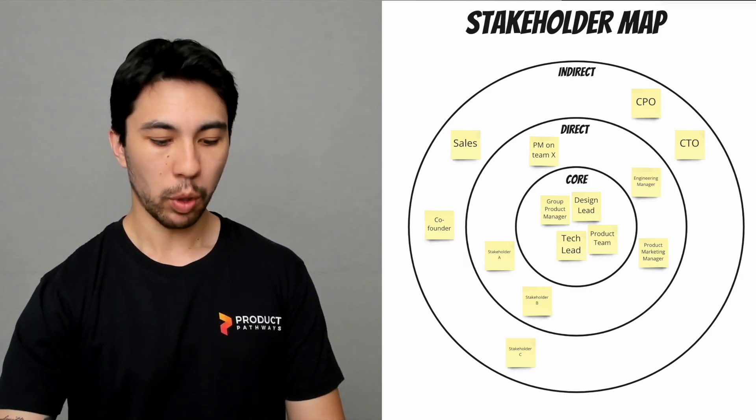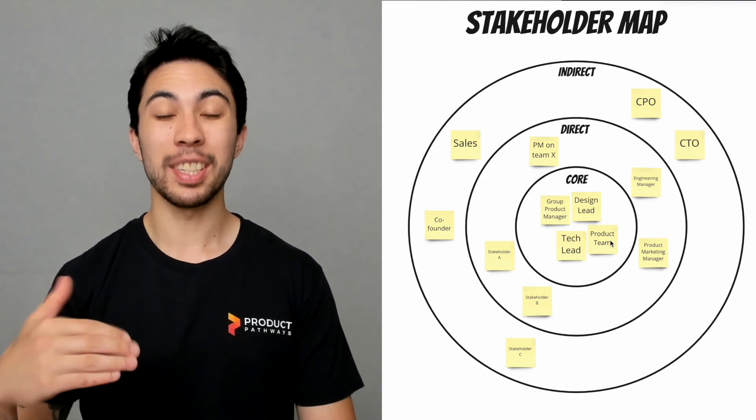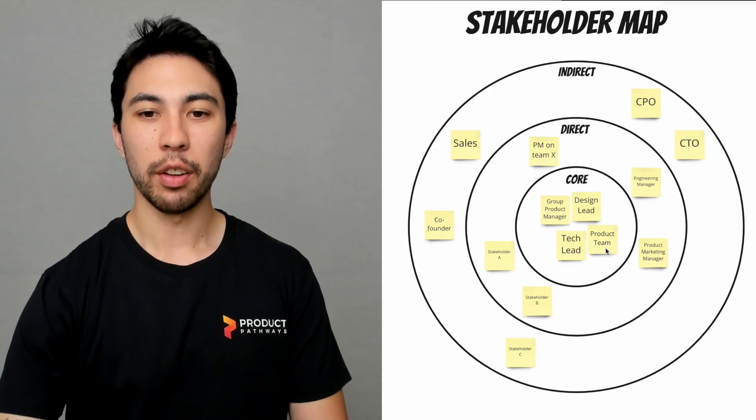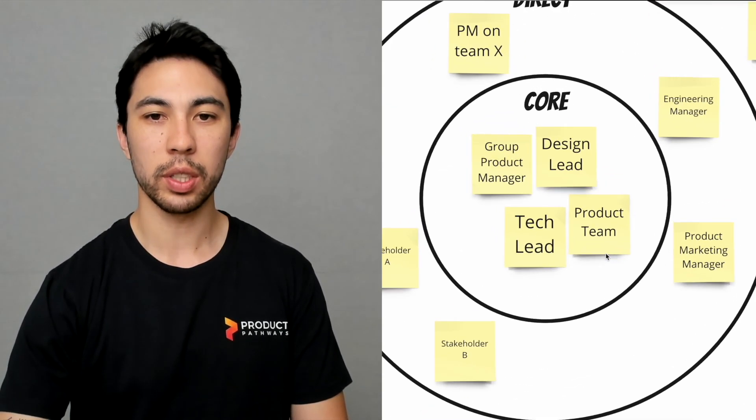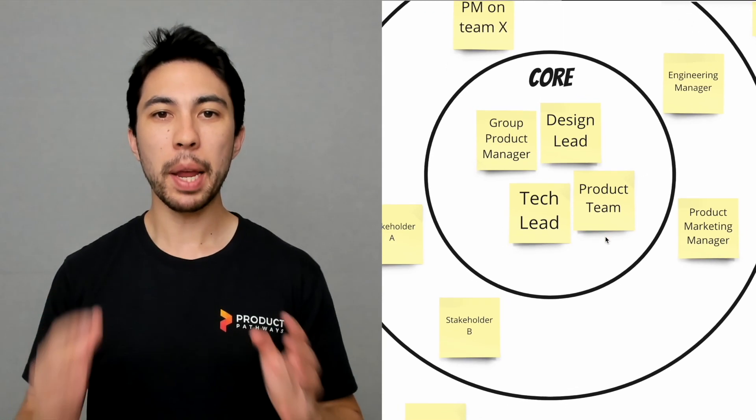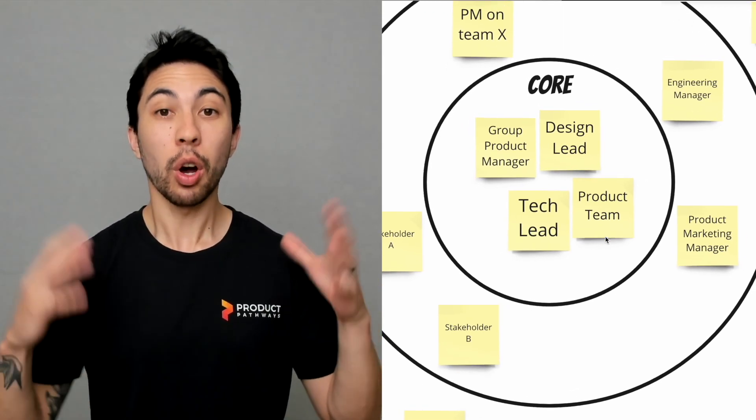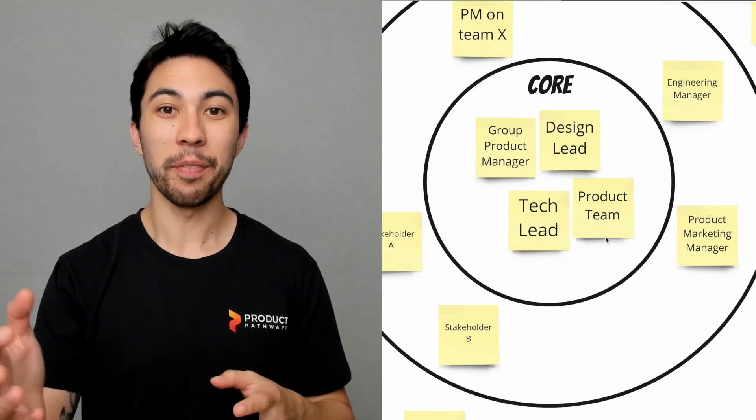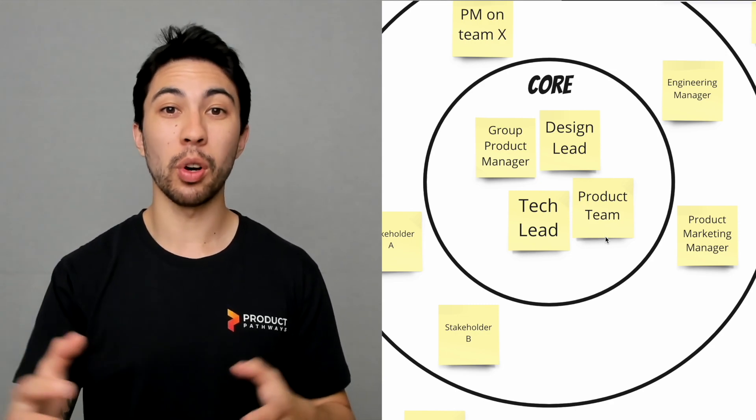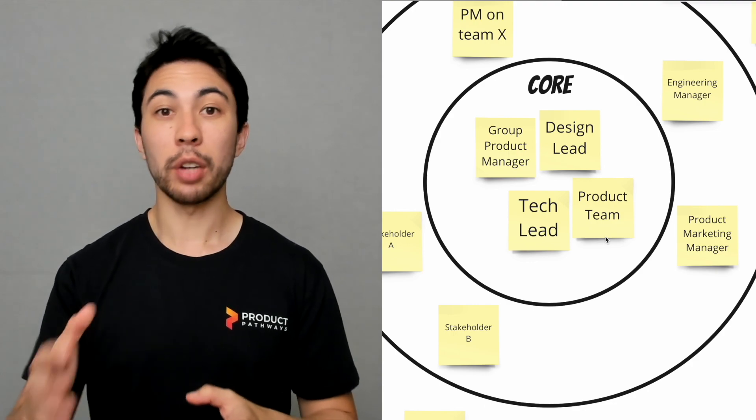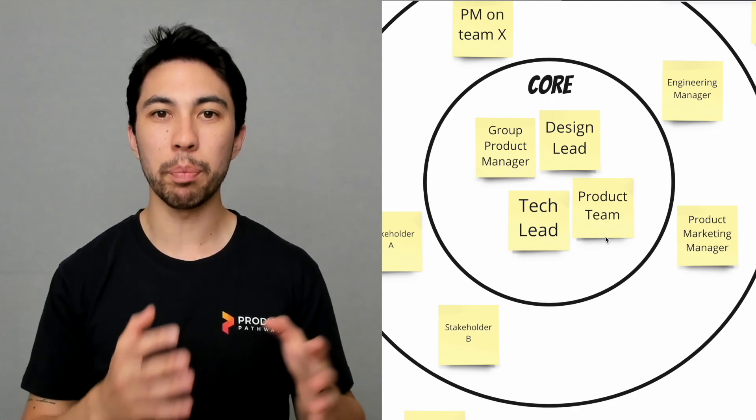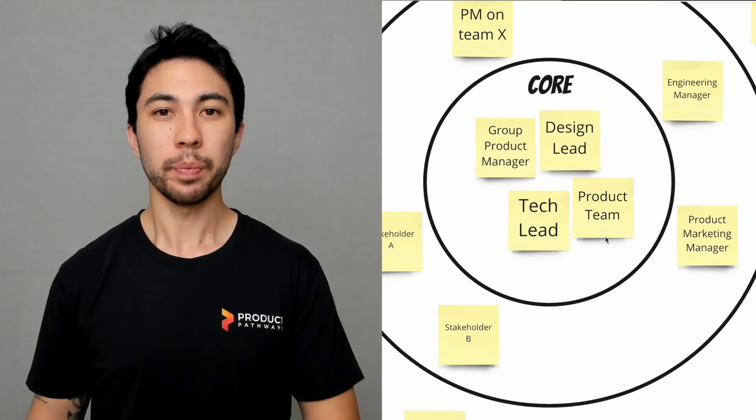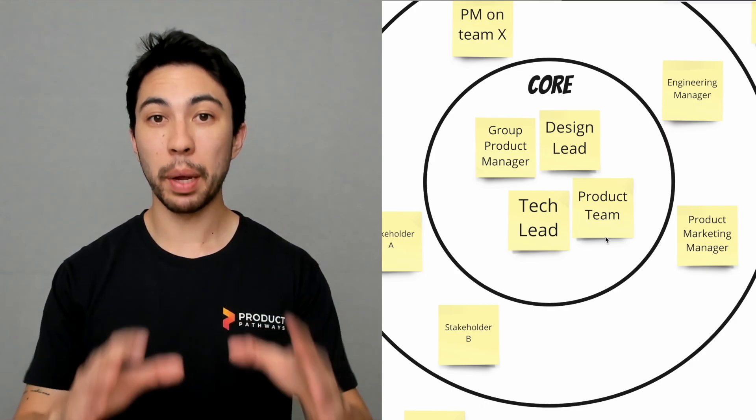The way this breaks down is you have three tiers of stakeholders. The first one is your core stakeholders. These are your top stakeholders; they tend to be very few in numbers. You're talking about someone like your direct manager or maybe the sponsor of the project or maybe the general manager for the business unit that your product belongs to.